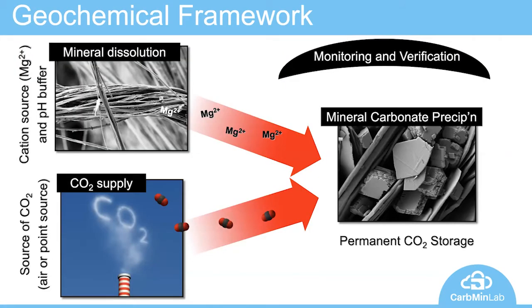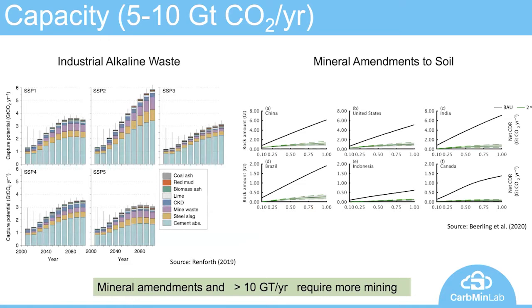The process here is one whereby we dissolve cations, combine them with CO2, and use them to make carbonate minerals, which gives us virtually permanent storage. In capture from air, we're typically limited by the rate of CO2 capture. When we supply concentrated CO2 — like from DAC or BECCS — we are really limited by mineral dissolution. So to increase rate, we need to make those minerals dissolve quickly. The capacity numbers typically come from papers like Renforth and Behrling, which looks at rates of alkaline waste production for several different scenarios into the future. For mineral amendments to soil, the total is about two gigatons per year, but it's going to require a lot of new mining to get there.